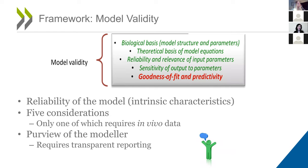For model validity, we are looking at the reliability of the model. There are five considerations listed, only one of which requires in vivo data — goodness of fit and predictivity. If we don't have in vivo data to calibrate the models, we really need to focus on the other four and invest effort in documenting them well. This falls under the purview of the modeler and requires very transparent reporting.